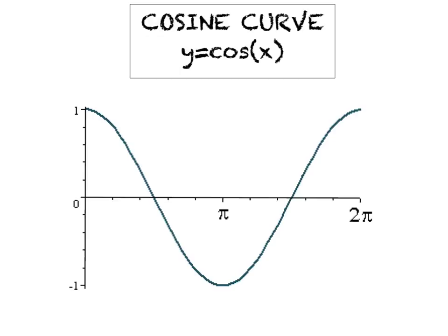Welcome to day two on our trig graphing unit. Today we're going to tackle the cosine curve. Yesterday we went through the sine curve very thoroughly, and today's video is going to be a little quicker because we've established the concepts of amplitude, frequency, and period and we don't have to start from scratch. The cosine curve is a lot like the sine curve except it's shifted about 90 degrees to the left.